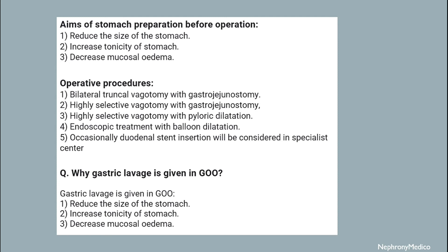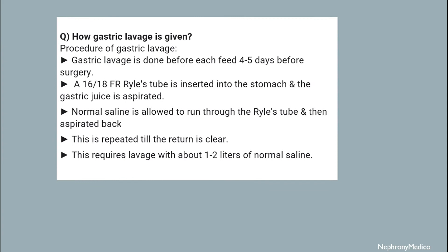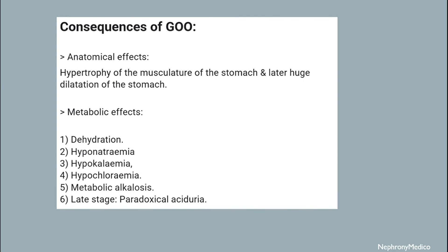Gastric lavage is given to reduce the size of the stomach, to increase tonicity of the stomach, and to decrease mucosal edema. Gastric lavage is done before each feed, four to five days before surgery. A Ryle's tube is inserted into the stomach, gastric juice is aspirated, and normal saline is allowed to run through the Ryle's tube and then aspirated back. This is repeated until the return is clear.